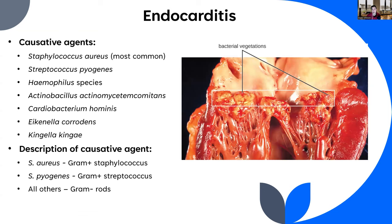Endocarditis is a direct infection of the heart tissue — bacterial vegetations can completely take over parts of the heart. The most common causative agent is Staphylococcus aureus, followed by Streptococcus pyogenes — another potential consequence of untreated streptococcal infection. Several Haemophilus species like H. influenzae can also cause this, along with Actinobacillus actinomycetemcomitans, Cardiobacterium hominis, Eikenella corrodens, and Kingella kingae.